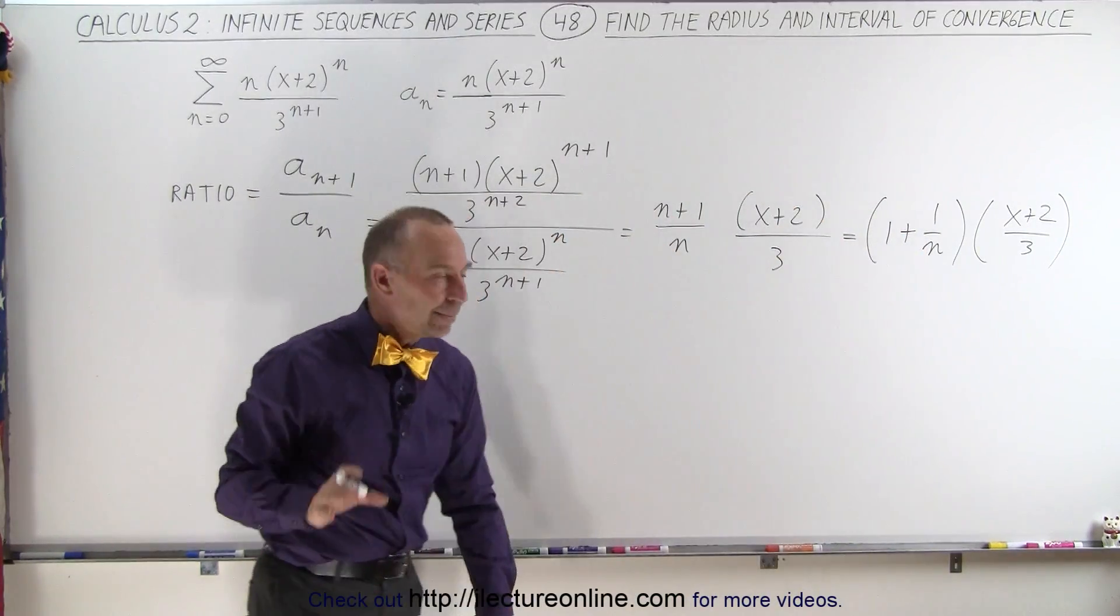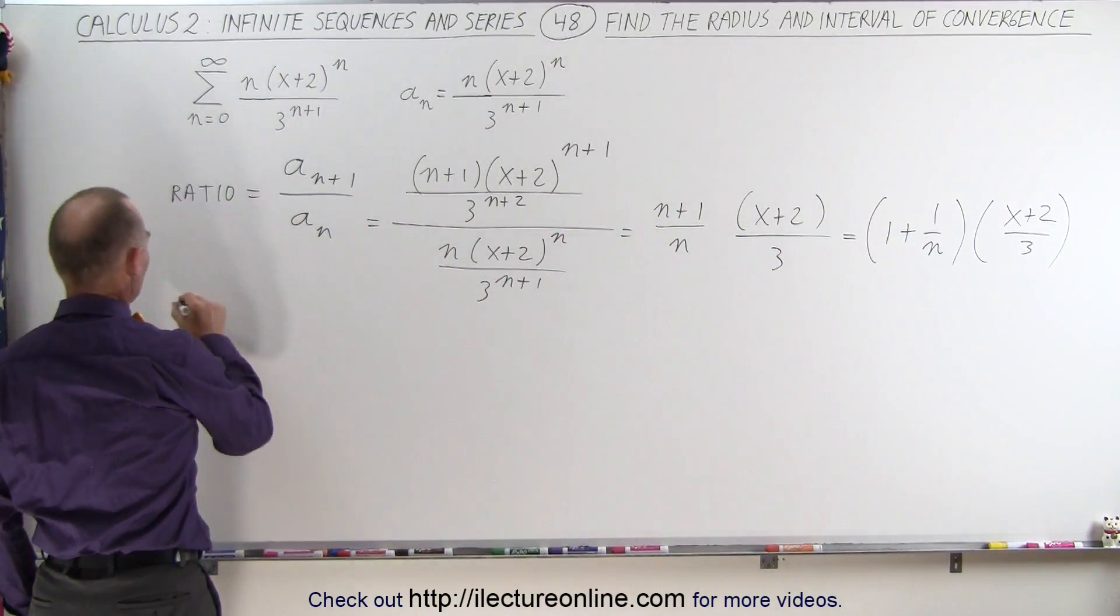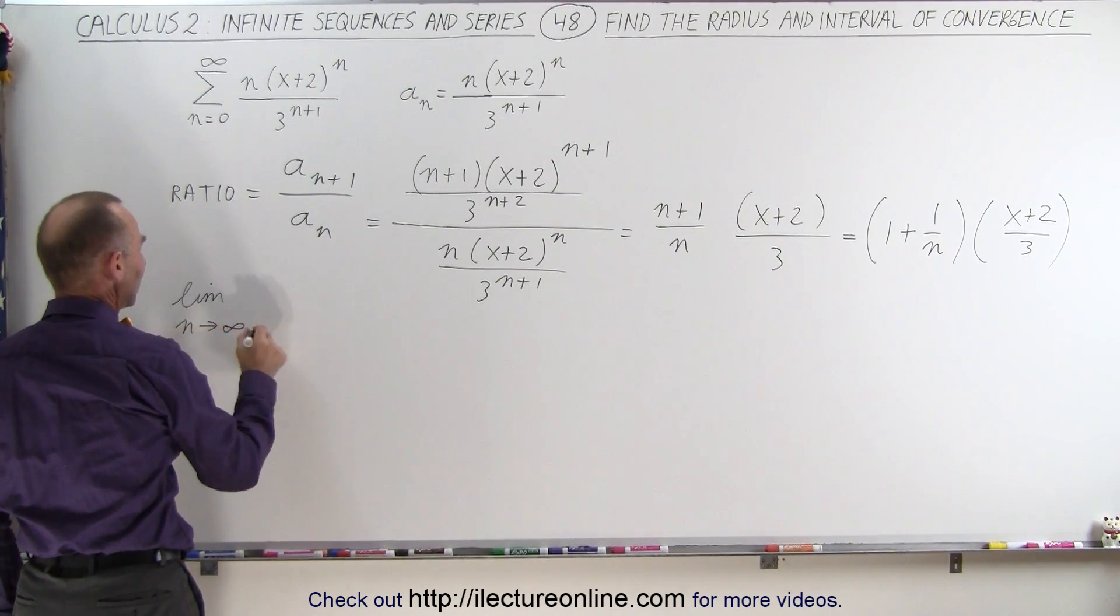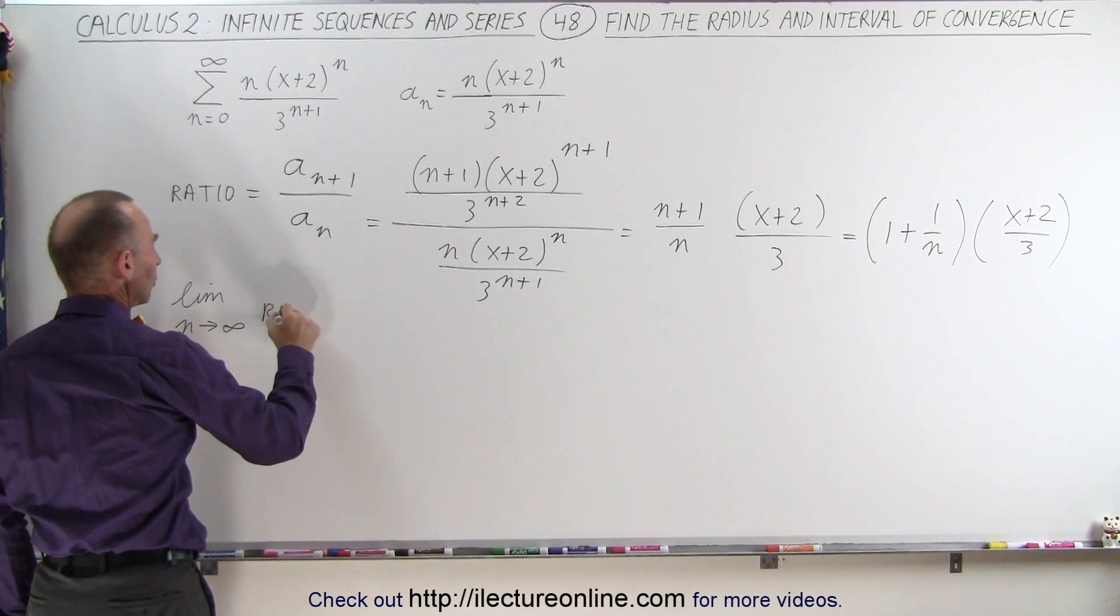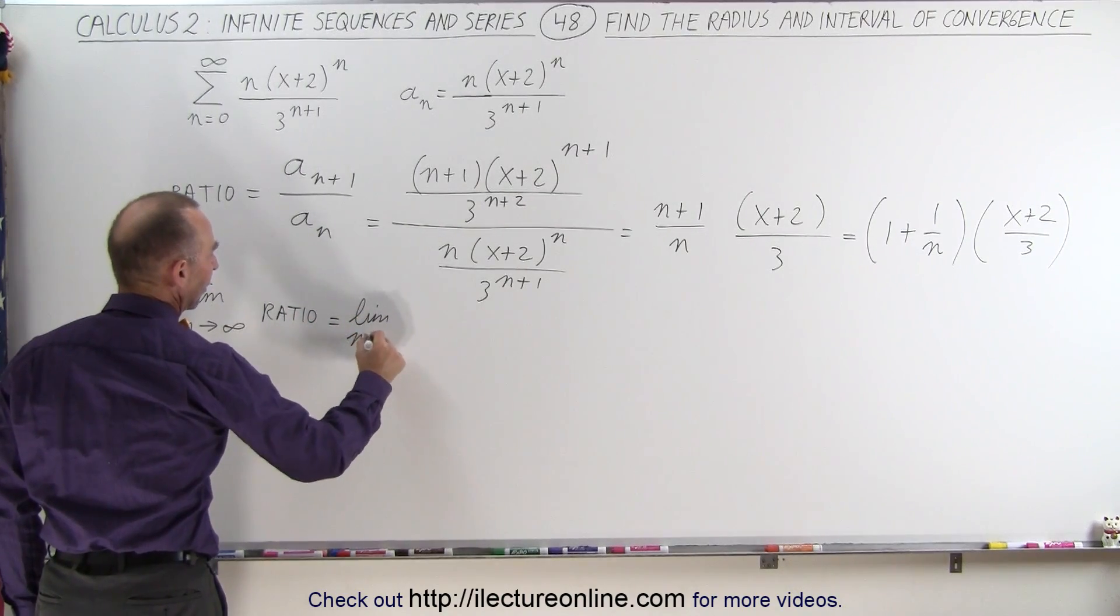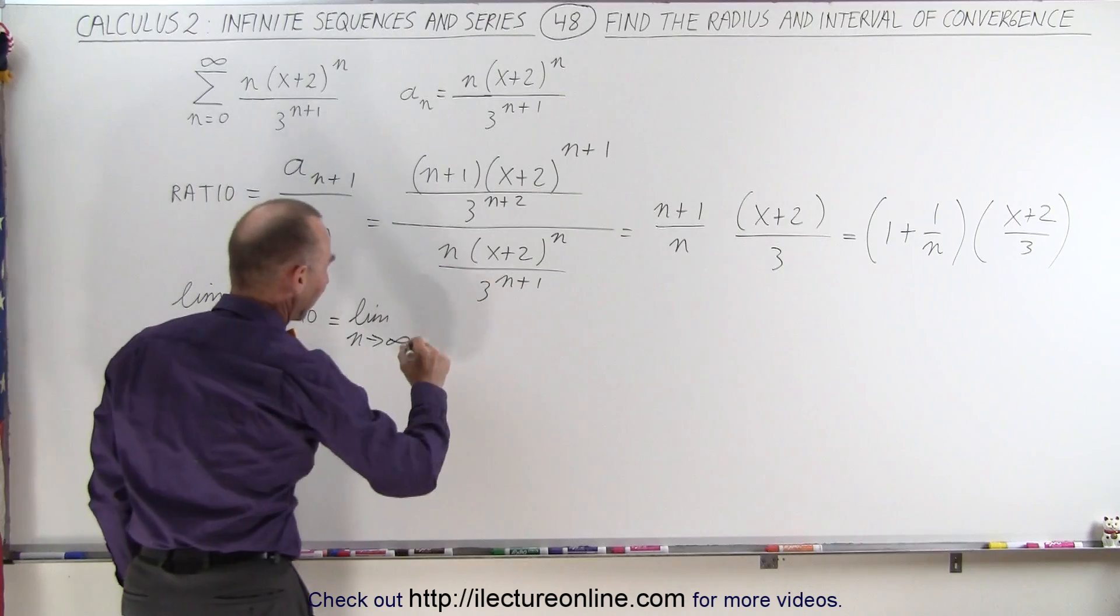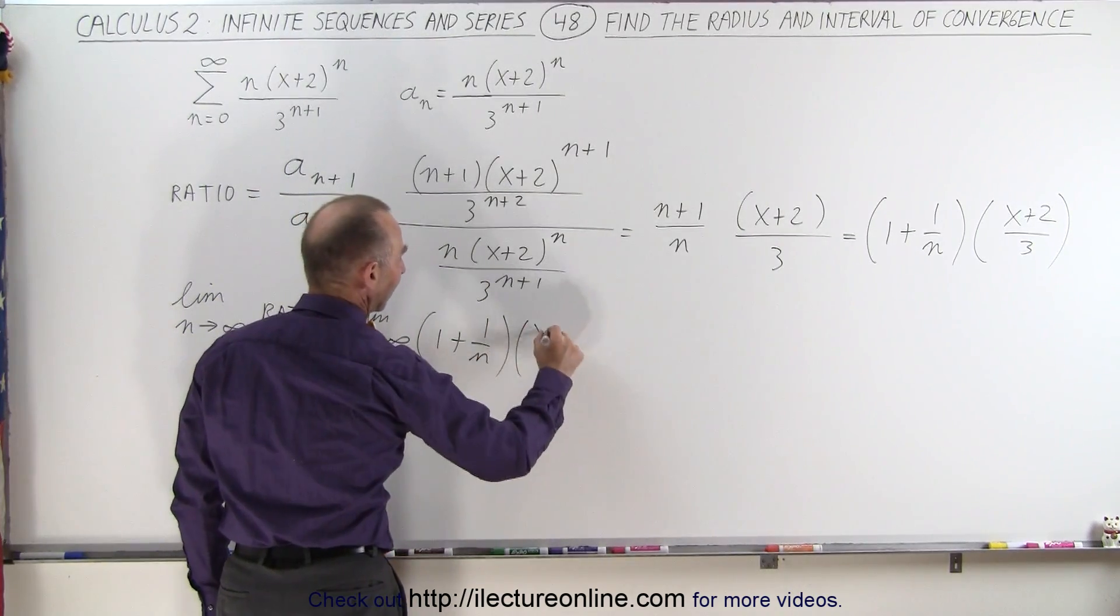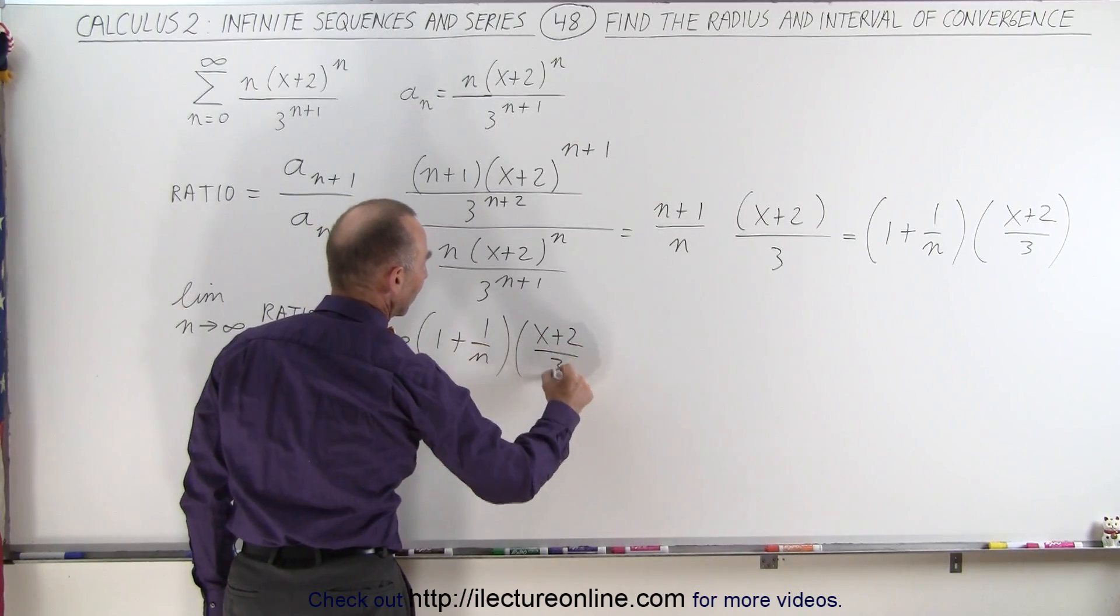And now we can go ahead and take the limit as n goes to infinity. So the limit as n approaches infinity of the ratio is equal to the limit as n approaches infinity of that quantity (1 + 1/n) times (x+2) divided by 3.